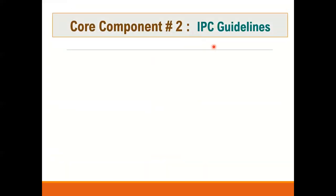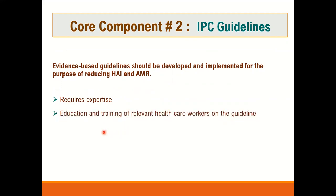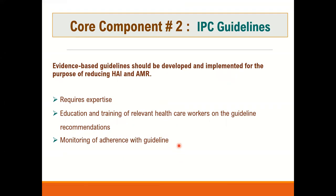Core Component Two is IPC guidelines. Evidence-based guidelines should be developed and implemented for the purpose of reducing HAI and AMR. This requires expertise and education and training of relevant healthcare workers on the guidelines to ensure effective implementation. Monitoring of effectiveness for the guidelines is a key point — unless we monitor or audit the performance of healthcare workers, we cannot guarantee effective implementation of infection prevention and control policies and procedures. Resources are also needed for implementation.